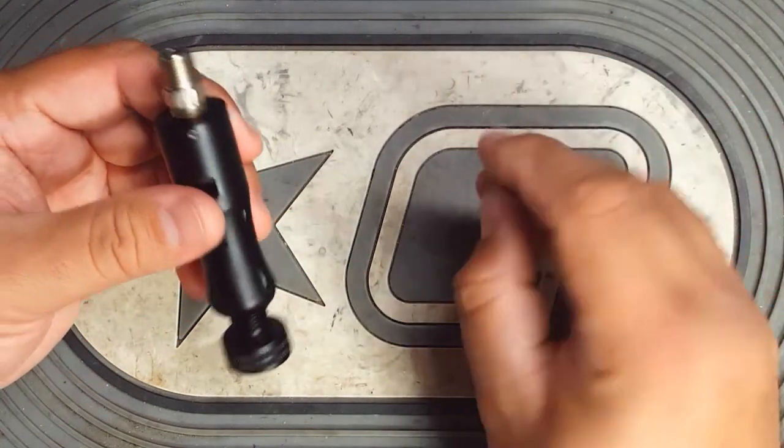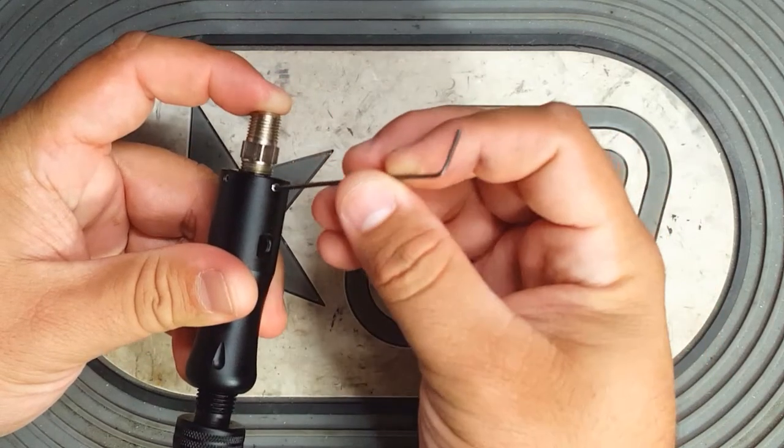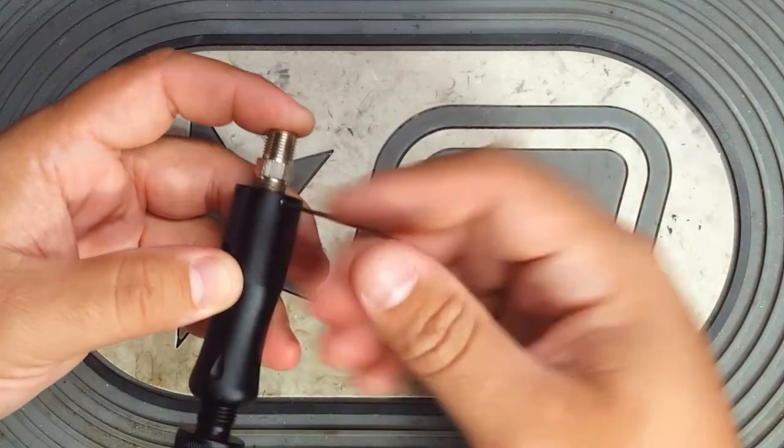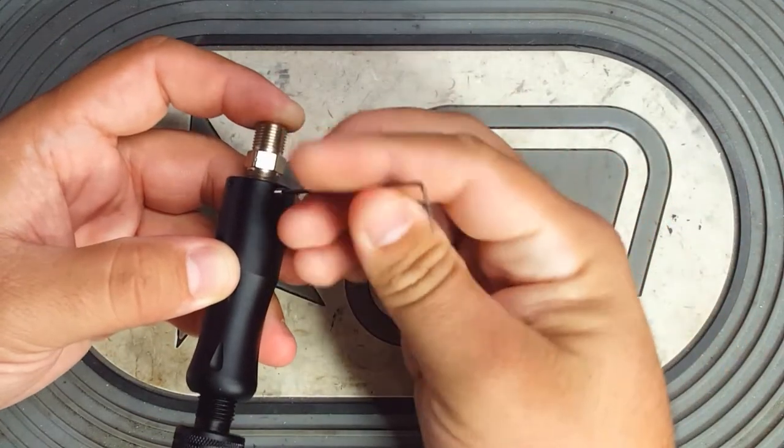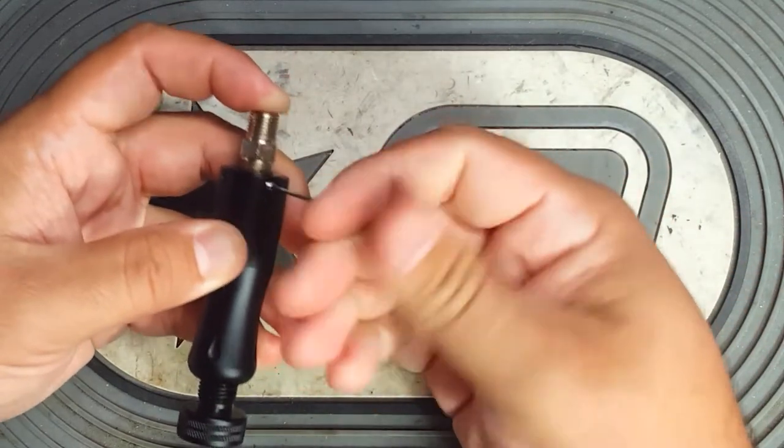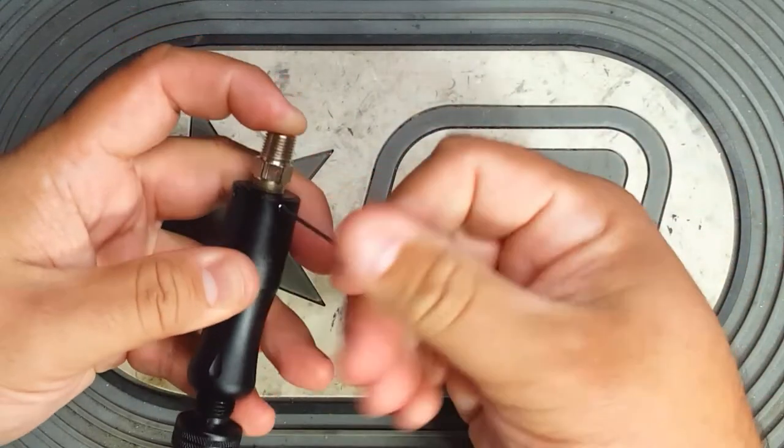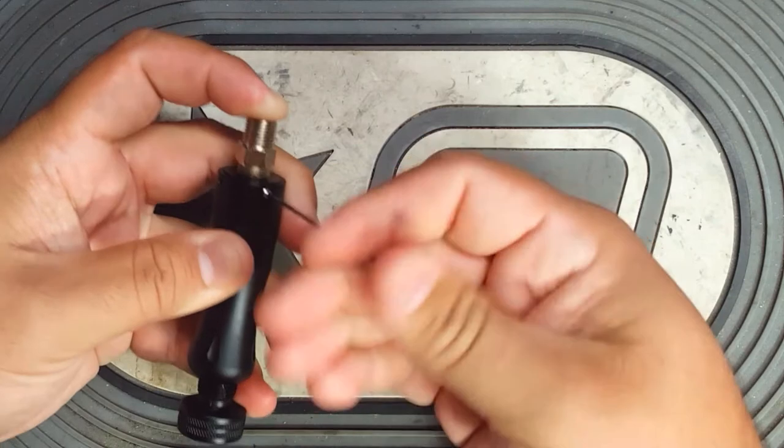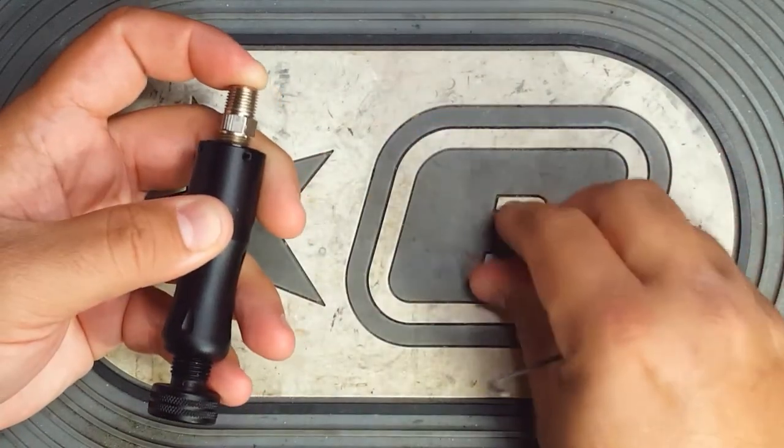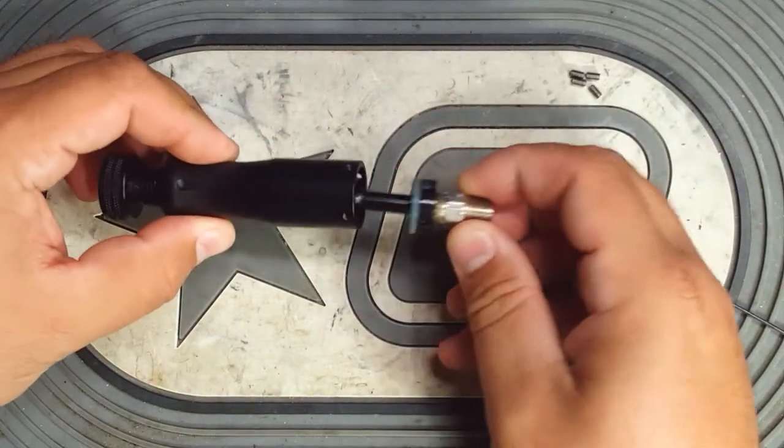So, to remove these set screws, it's just as simple as unscrewing each one in order. They should come out pretty easily. This is to access the reg seat inside the regulator. Set aside. This piece should come out just like that.